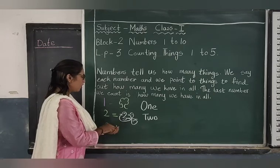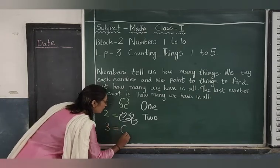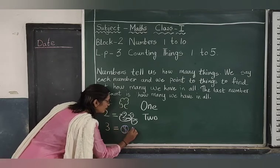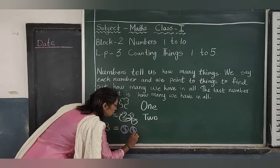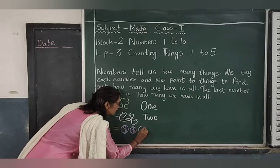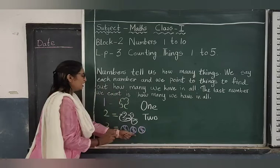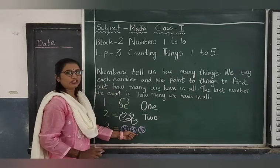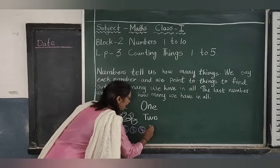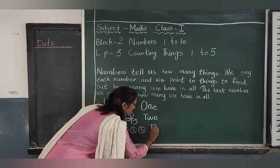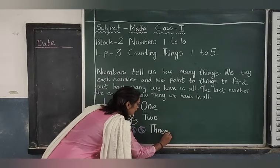3. So what should we draw? Balls. 1, 2, 3. Now the number name for 3 — I should write: T-H-R-E-E, 3.